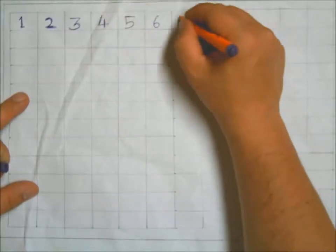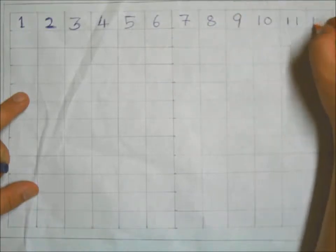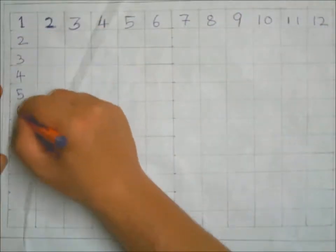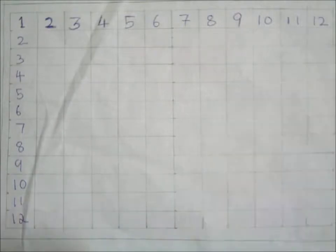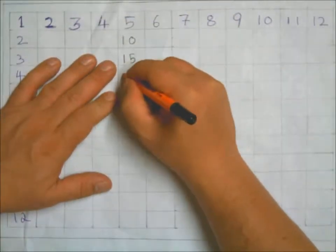Right, we're going to have a look at doing a table square. So we get the numbers 1 to 12 running across the top and then 1 to 12 running down the side. Notice that 1 is right in the corner there.